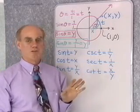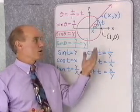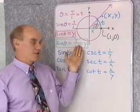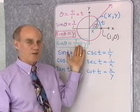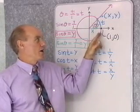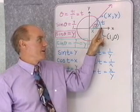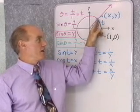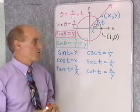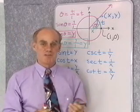The sine of θ equals y, no matter whether I use definition 1, definition 2, or this new third definition. So there are three different ways to define the trigonometric functions, and all of them are consistent with each other. Definition 1 works well if we have a point on the terminal side of an angle in standard position. Definition 2 works well for right triangles. Definition 3 works well on the unit circle and gives us a real number measure for angles.